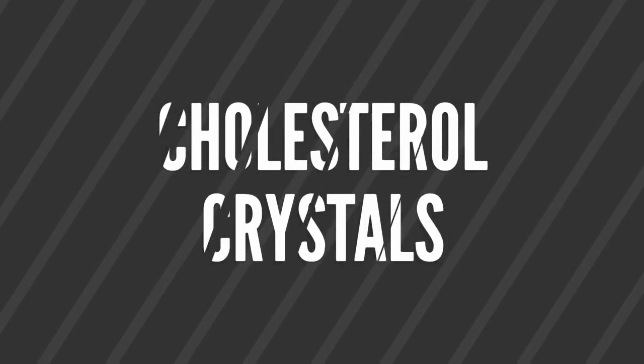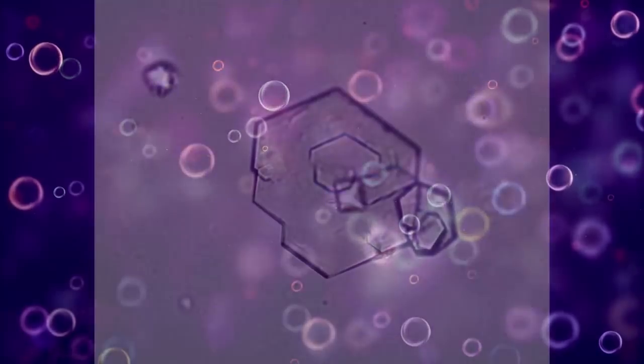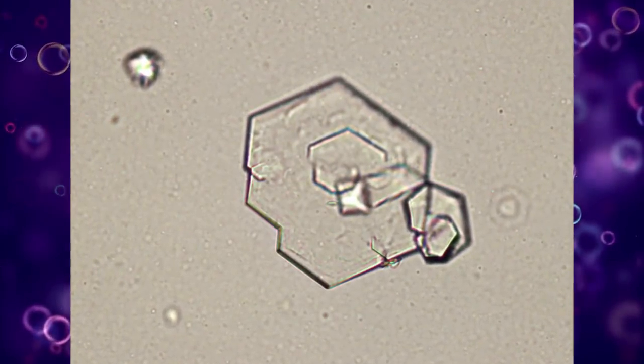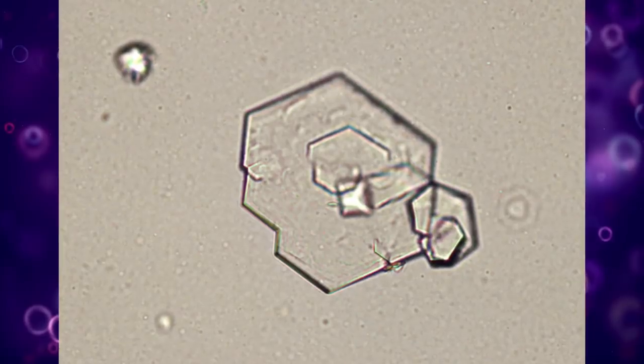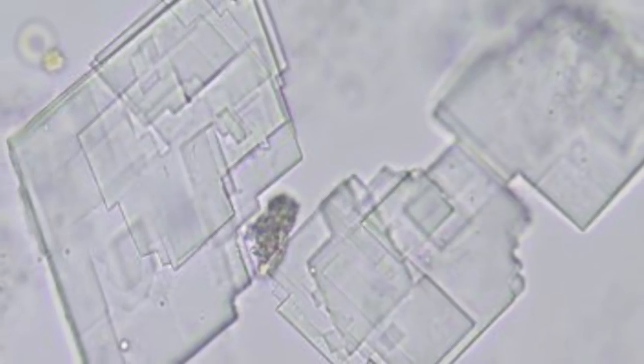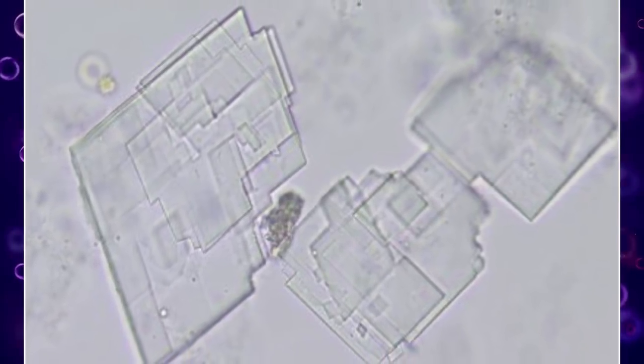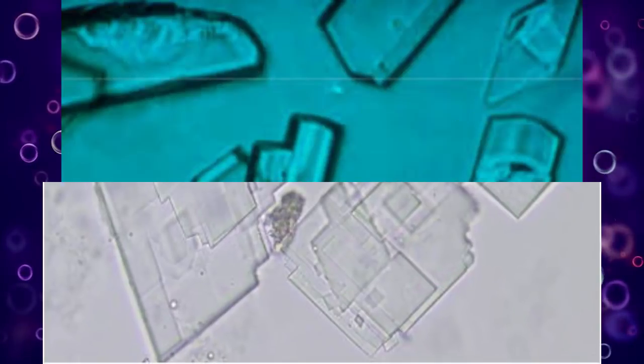Cholesterol crystals appear as colorless rectangular plates with a notch in one or more corners and are found in acidic urine. Cholesterol crystals are associated with nephrotic syndrome.